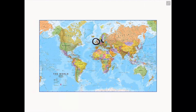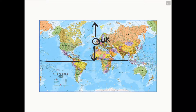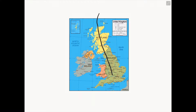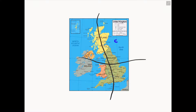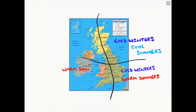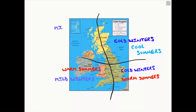The UK climate varies due to the UK's location on our planet, being mid-latitude between the most northerly part of our planet and the equator. If we take a UK map and split it into four regions, we find that the northeast experiences cold winters and cool summers, the southeast has cold winters and warm summers, the southwest has mild winters and warm summers, whereas the northwest receives mild winters and cool summers.